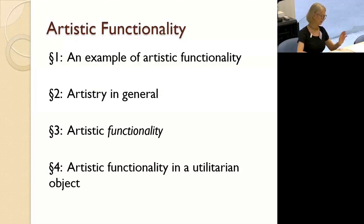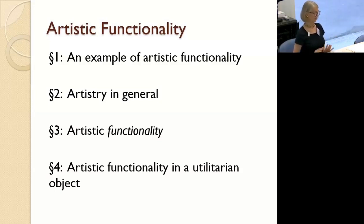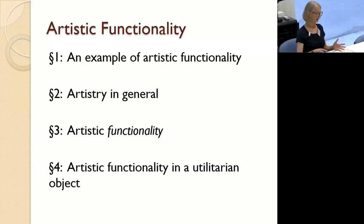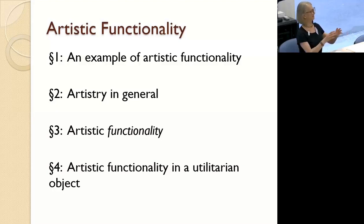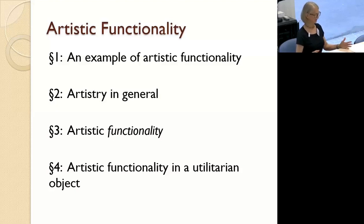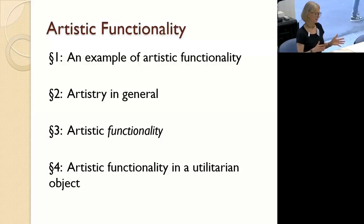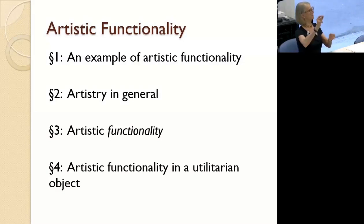A couple of clarifications before I begin. I say a lot about functions and functionality, but I'm not going to discuss what determines an object's functions, because I want to focus on how artistry can be involved in functional design, however functions are determined. Second, I'll be discussing artistry that has to do with the design of an object. A design is something capable of multiple realizations — the design for a vase can be realized in many different objects. Scripts have multiple realizations in different productions and performances. I'm looking at the design aspects of scripts, not qualities of uniquely physically fabricated objects like the artistry of the brush stroke in painting.